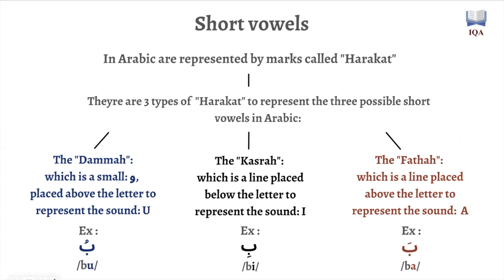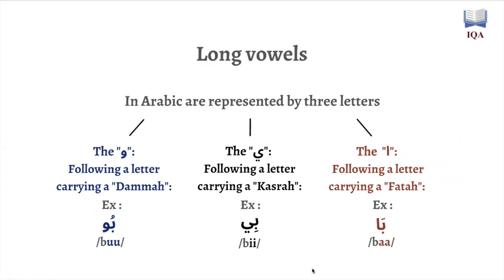Moving on to long vowels: long vowels in the Arabic language are represented by three letters. The difference between a short vowel and a long vowel is that a short vowel produces a short vowel sound — 'ba,' 'bi,' 'bu' — while a long vowel represents a long vowel sound — 'buu,' 'bii,' 'baa.'